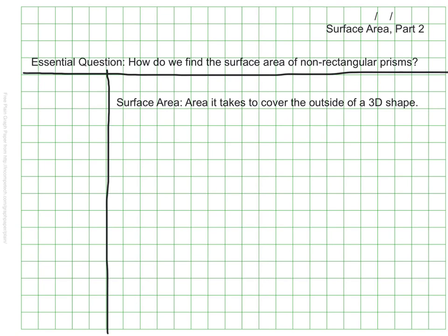We already know that surface area is the area it takes to cover around the outside of a 3D shape. However, up until this point we have only calculated surface areas of rectangular prisms. So right now we're going to look at finding the surface area of non-rectangular prisms. Specifically, we'll look at triangular prisms as well as pyramids.